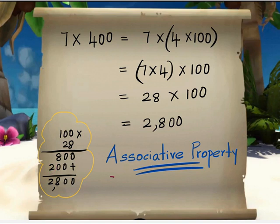So we know that 28 times 100 is equal to 2800. This is the associative property. And in this property, even if we move the parenthesis, the value or the answer doesn't change.